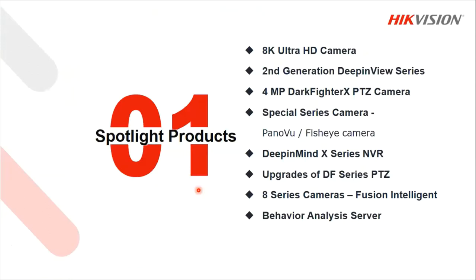So for today, this is what we're going to look at. We're starting off with the 8K Ultra HD cameras — phenomenal resolution. We'll look at the second generation Deep in View series devices, 4 megapixel Darkfighter X PTZs, special cameras like the Panaviews and fisheyes including the second generation fisheye, Deep in Mind X-Series NVR, upgrades to the DF series PTZs, 8-series cameras with Fusion Intelligent functionality, and the behavior analysis server.